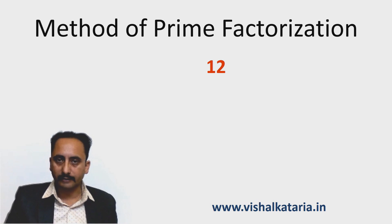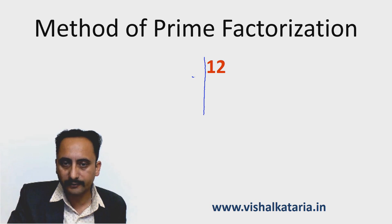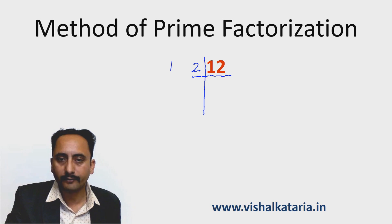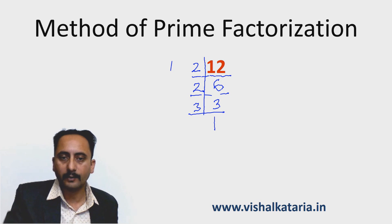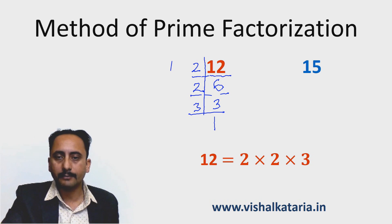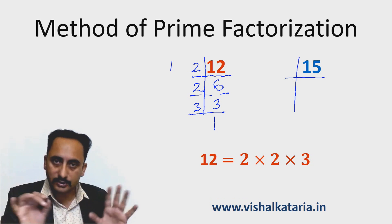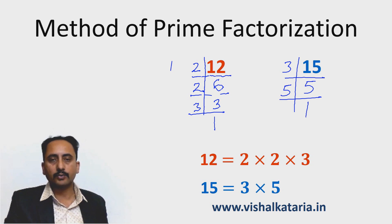I'm going to discuss the method of prime factorization to find LCM. Again, we have the number 12. I'm going to find the prime factors of 12, as explained in the first video of this series. 12 is even, so 2 is a factor: 2 × 6 = 12. 6 is also even: 2 × 3 = 6. So the prime factorization of 12 is 2 × 2 × 3. For 15: it's not even, so not divisible by 2. It is divisible by 3: 3 × 5 = 15. So the prime factorization of 15 is 3 × 5.